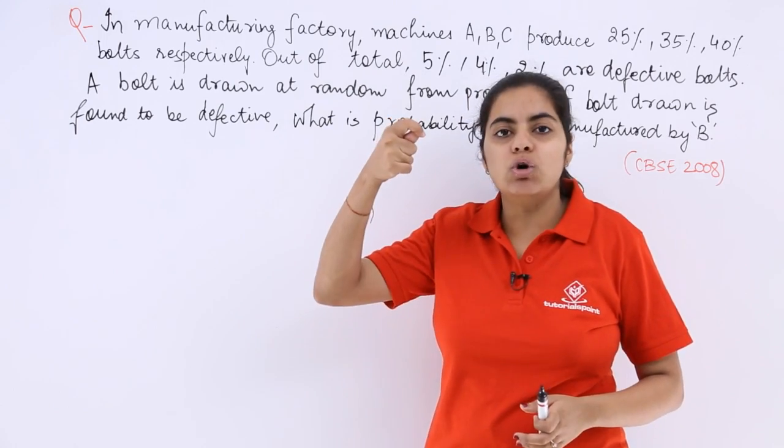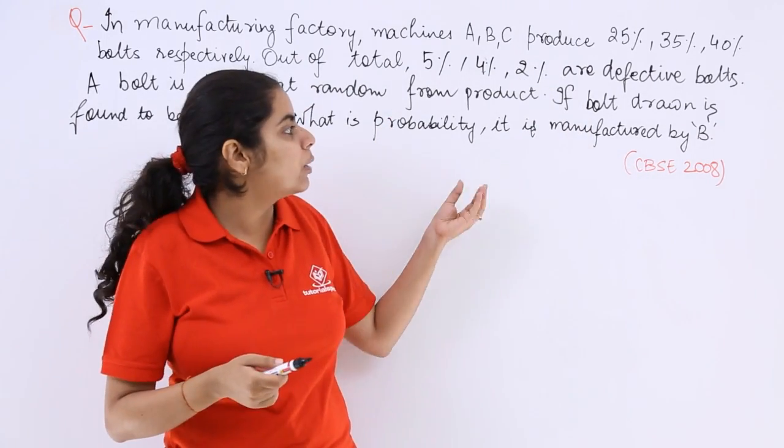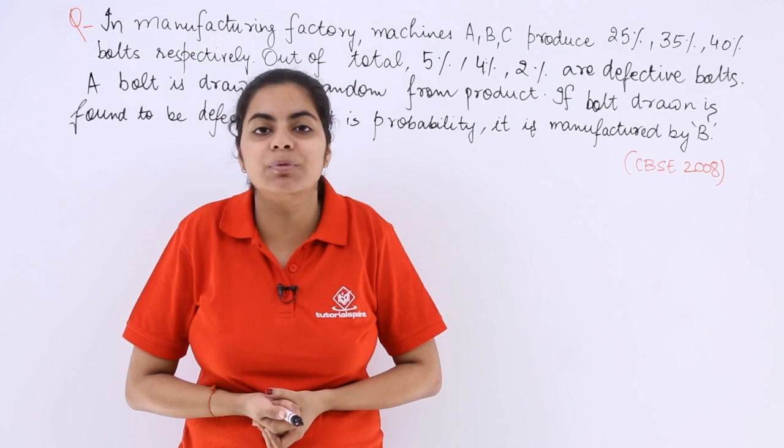A bolt is drawn at random from the product. If the bolt drawn is found to be defective, what is the probability it is manufactured by machine B?